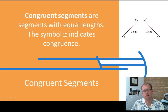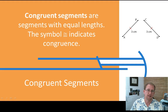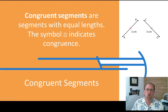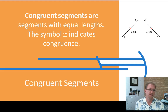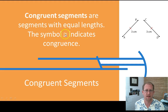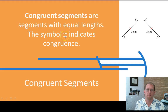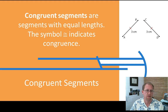Now that we can measure segments, we can determine if two segments are the same length. If we measure two segments and find they are exactly the same length, we say they are congruent. Congruent segments are segments with equal lengths, and we have a symbol — an equal sign with a squiggly top hat. The squiggly part is like the approximation symbol, so together it means they're not the exact same segment but they are the same length. The word for that is congruent.